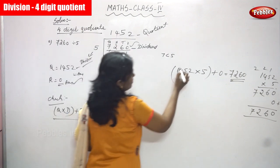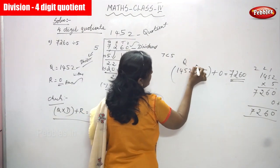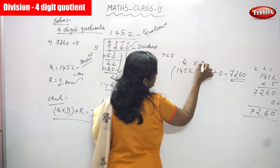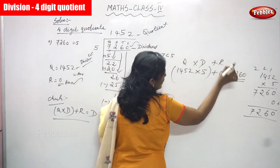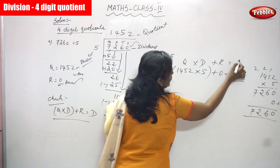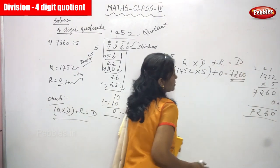In summary: quotient multiplied by divisor plus remainder gives you the dividend.